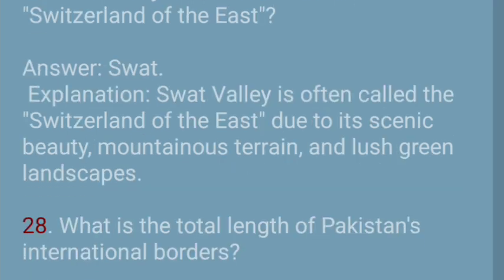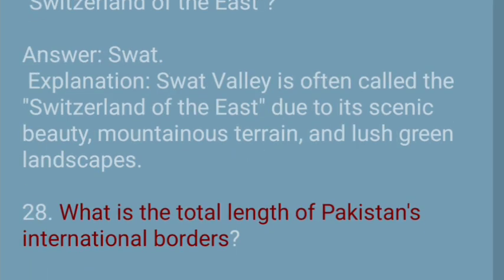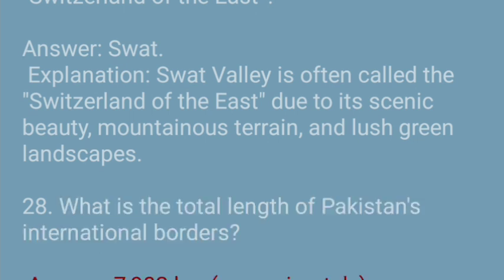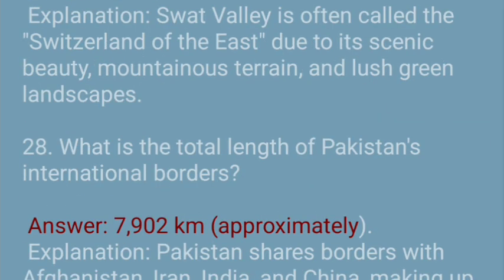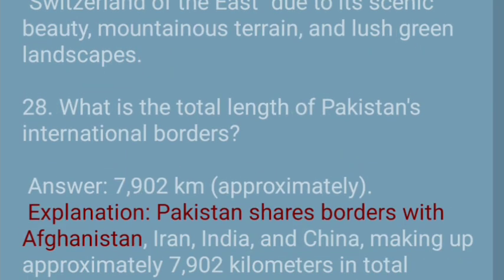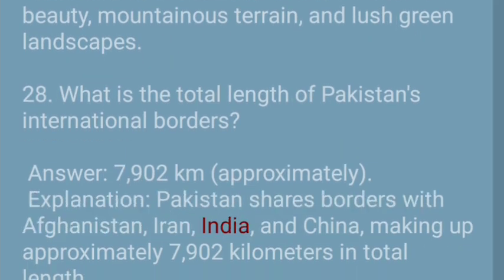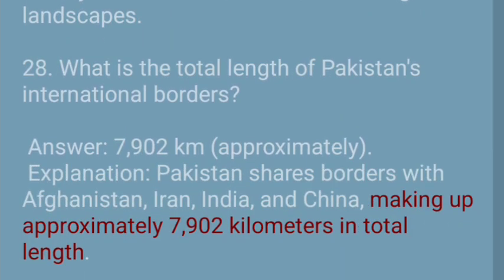Question 28: What is the total length of Pakistan's international borders? Answer: 7,902 kilometers approximately. Explanation: Pakistan shares borders with Afghanistan, Iran, India, and China, making up approximately 7,902 kilometers in total length.